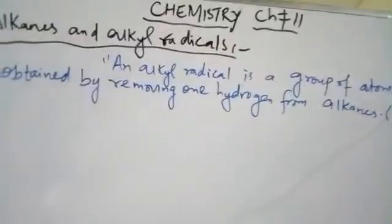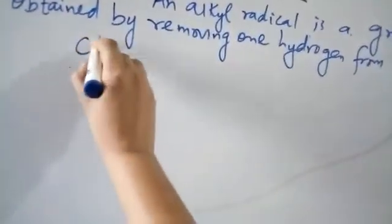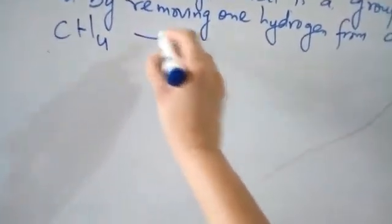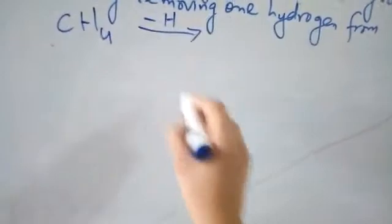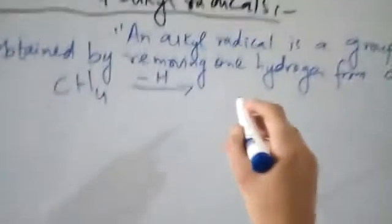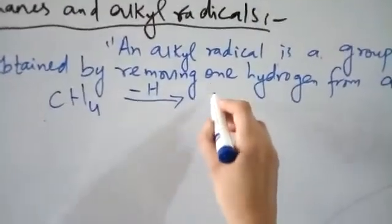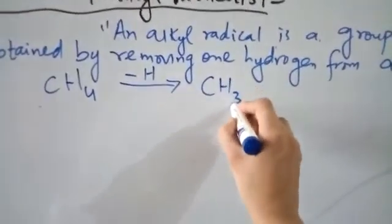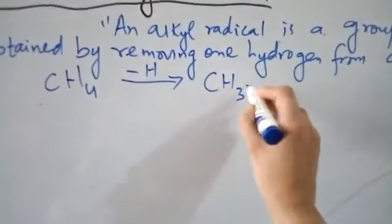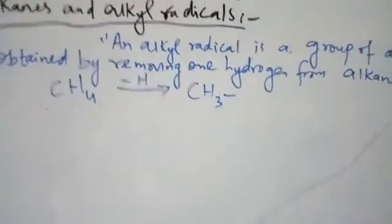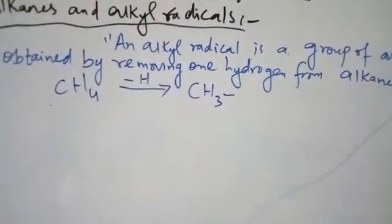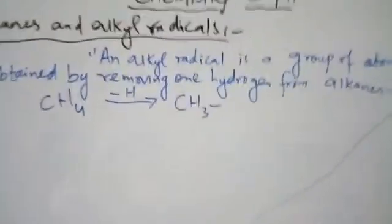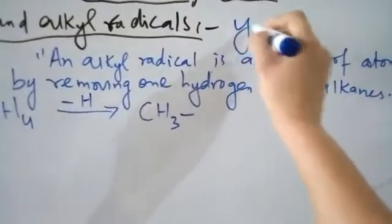For example, if you have methane — methane's formula is CH4. When we remove one hydrogen from methane, we will get a methyl radical. This radical is called a methyl radical. Alkyl radicals' ending is '-yl'.